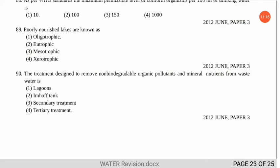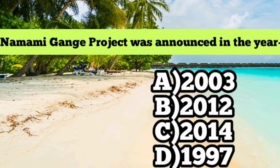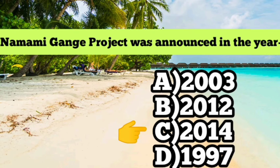The next question asks in which year the Namami Ganga project was announced. This project was designed for cleaning the Ganges river, and the correct option is C — 2014.